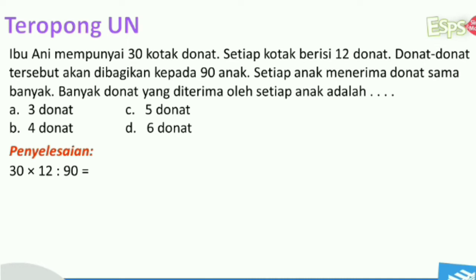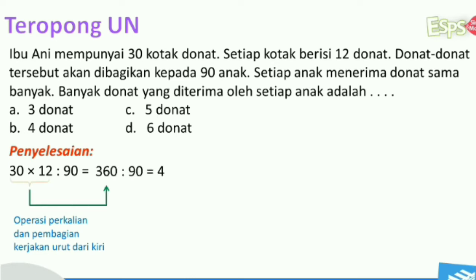Kalimat matematika yang dapat kita peroleh dari soal cerita di atas adalah 30 dikali 12 dibagi 90. Operasi hitung ini terdapat operasi perkalian dan pembagian, maka operasi perkalian dan pembagian dikerjakan urut dari kiri. 30 dikali 12 sama dengan 360. 360 dibagi 90 sama dengan 4.